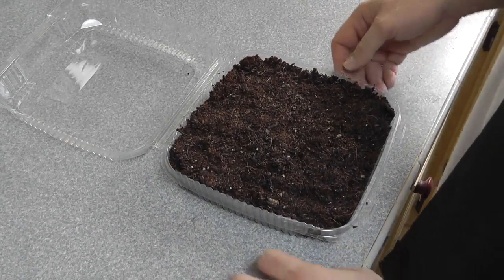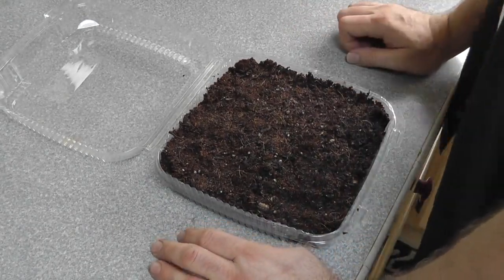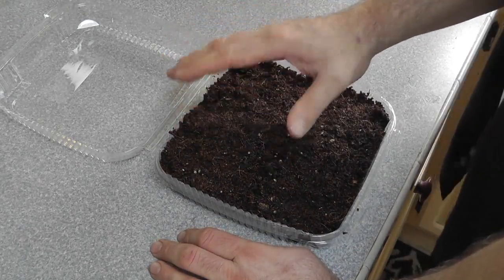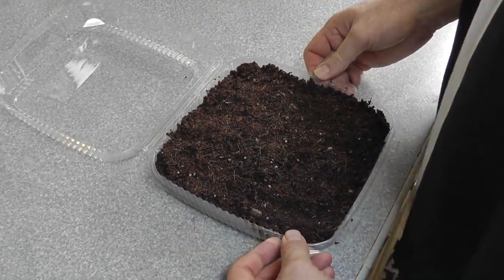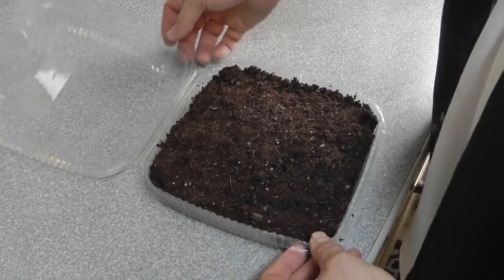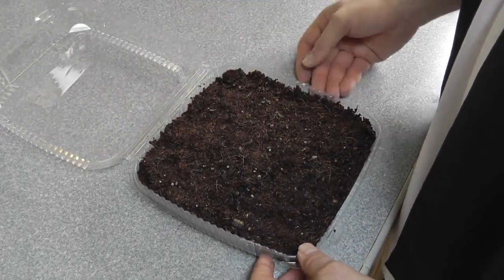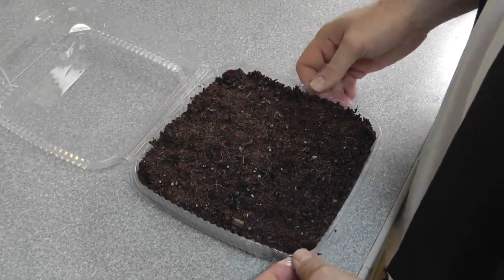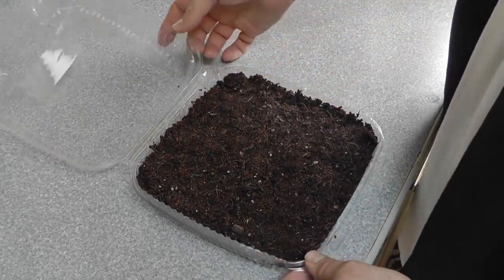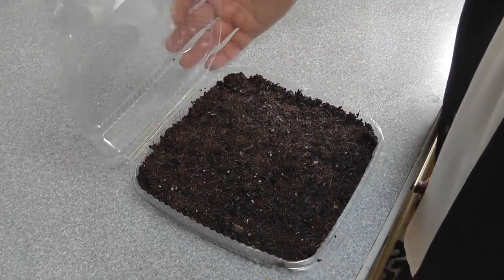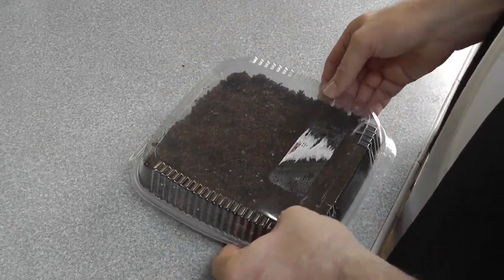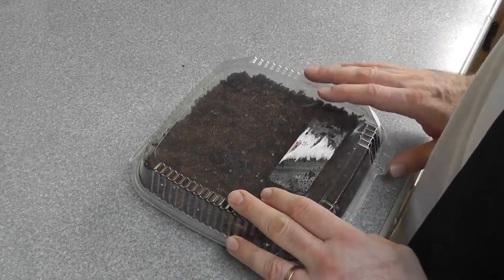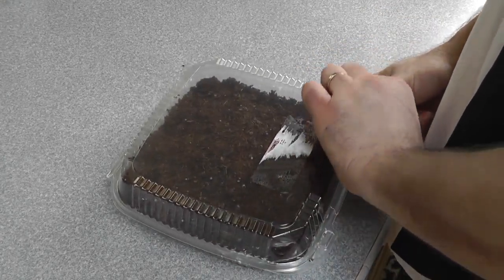Here's the container I've chosen to use. A lot of people buy fancy cell packs with domes, but I think we can save money. This was from a potluck - it's a little mini greenhouse with a lid built right in. I encourage you to be creative and recycle instead of just pitching it.